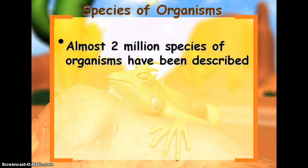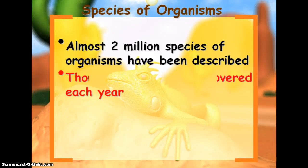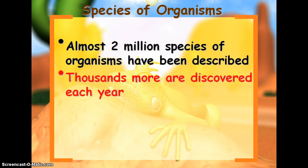First, in the notes packet, almost two million species of organisms have been described. There's more discovered each year, so we're not limited to the number of species we know right now. There are places we either haven't been, like deep down in the ocean, where there might be individual species we haven't identified or seen before. Also with evolution, there could be new species developing or evolving over time.